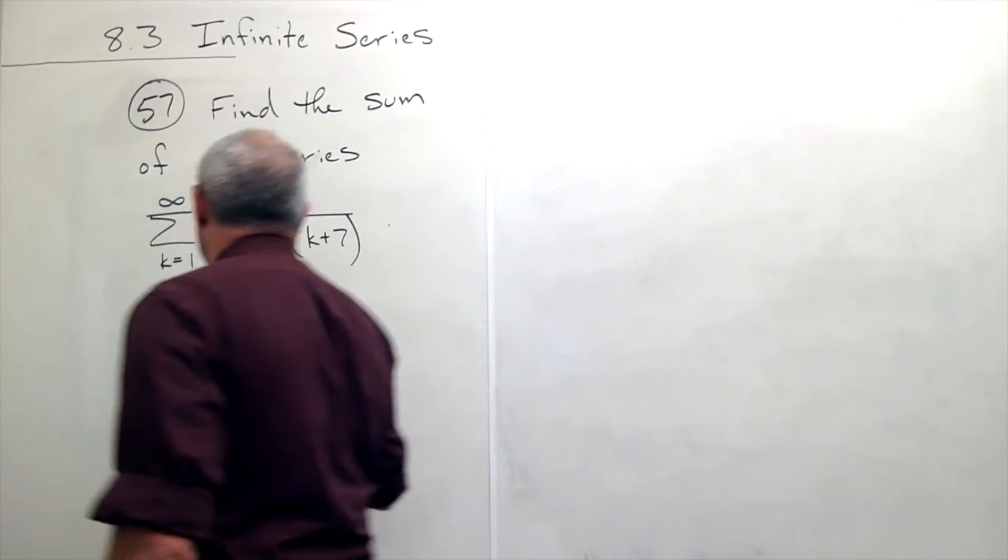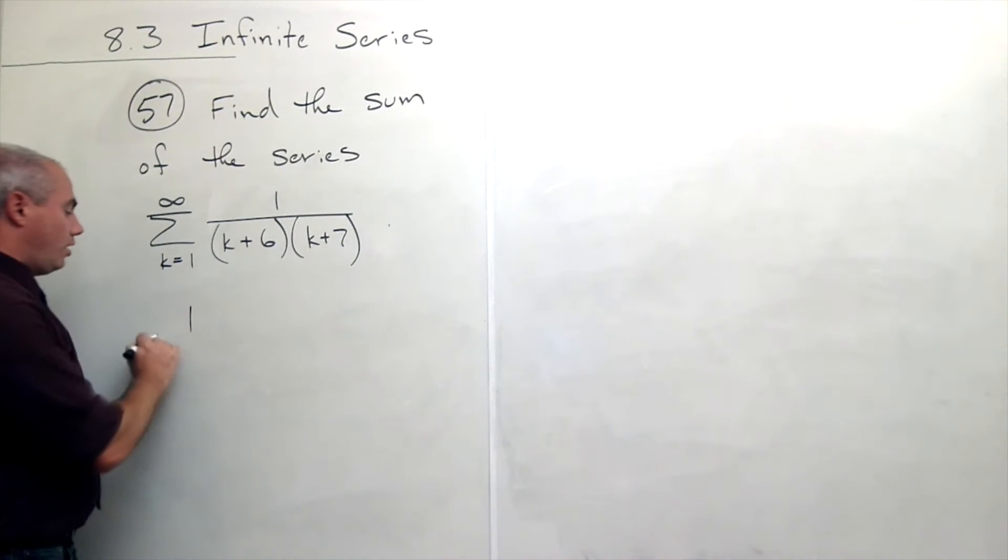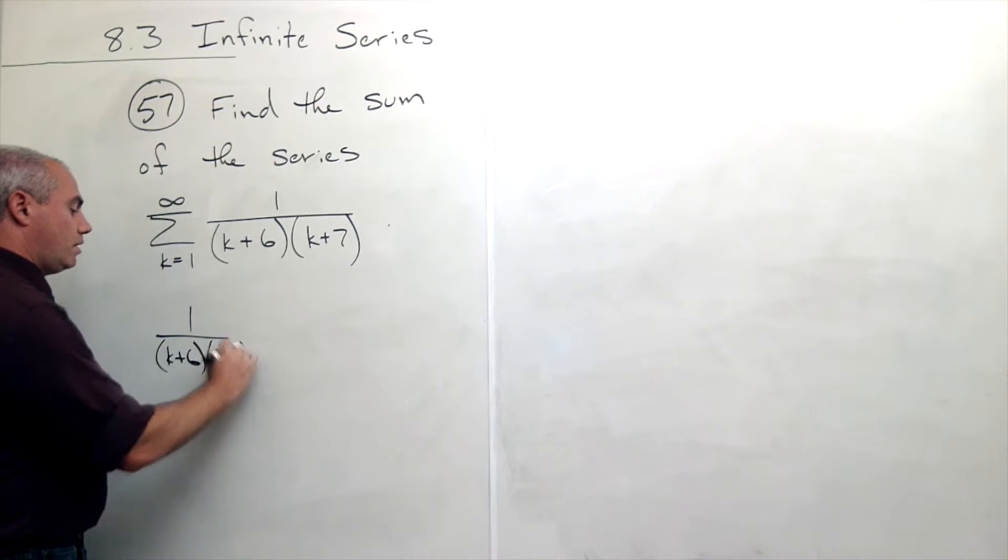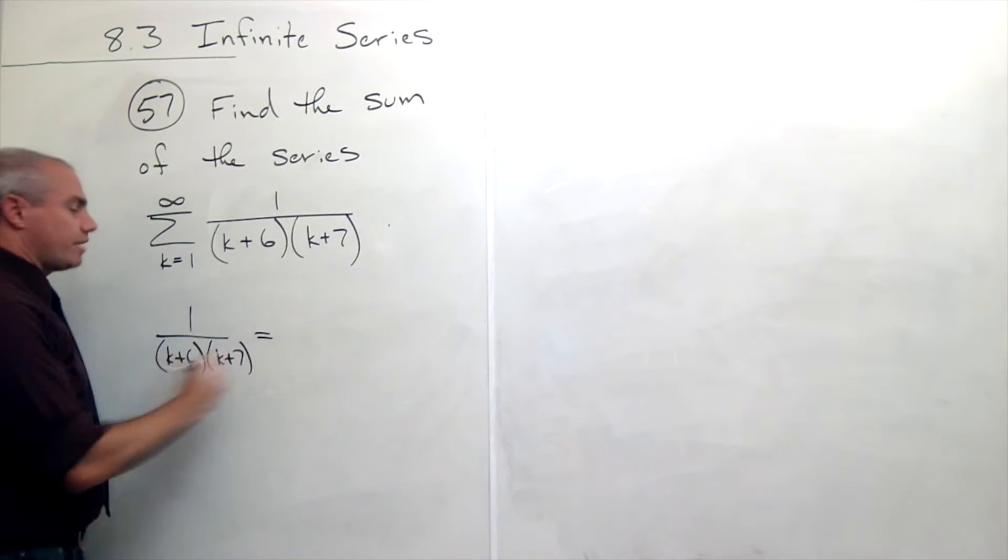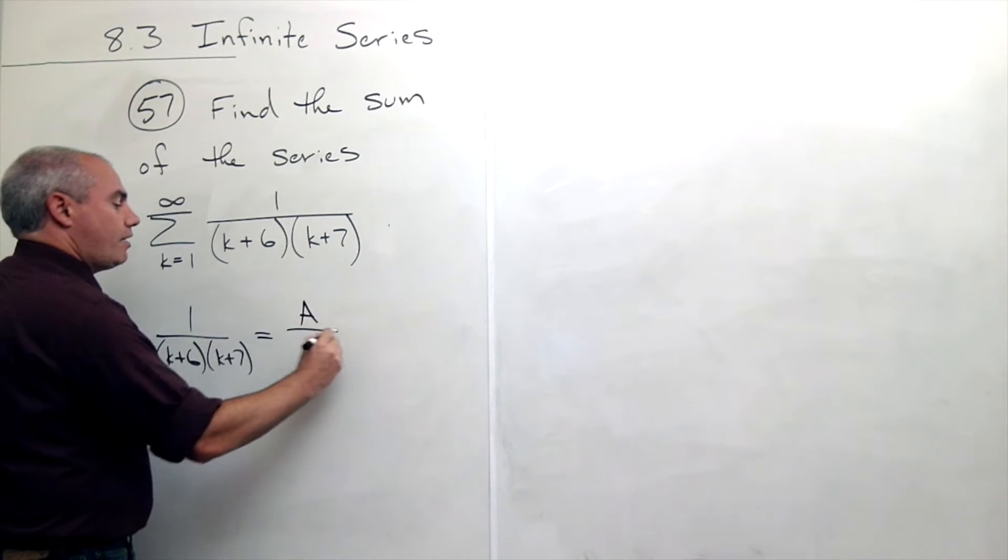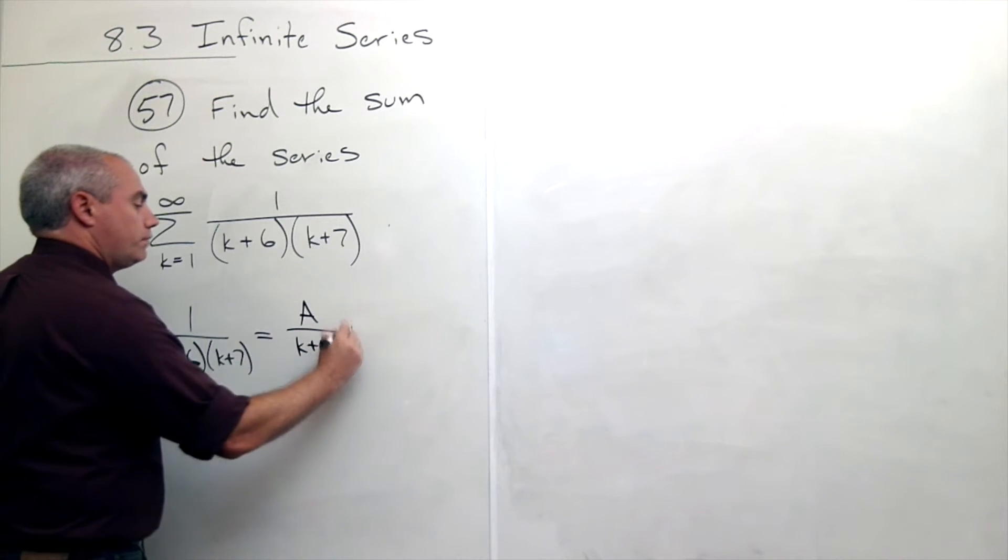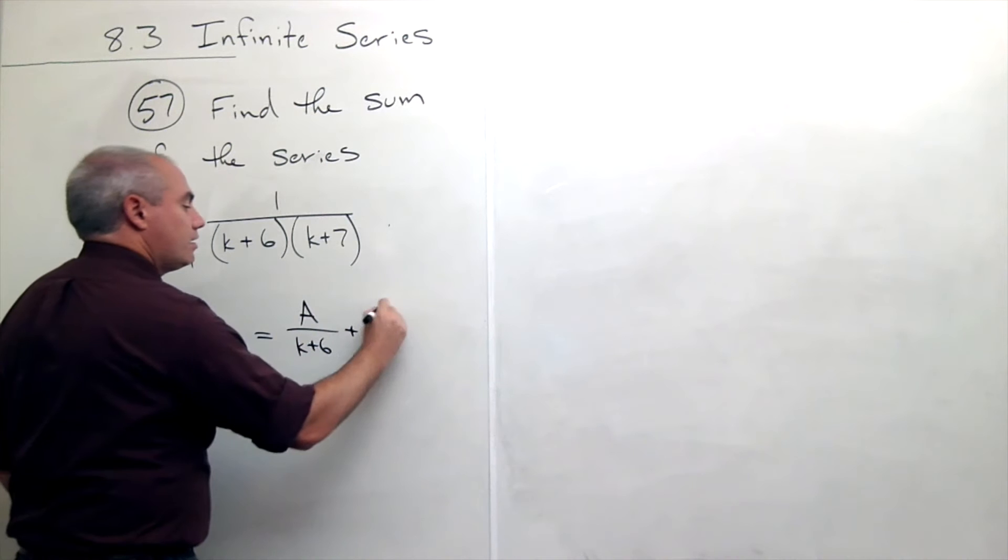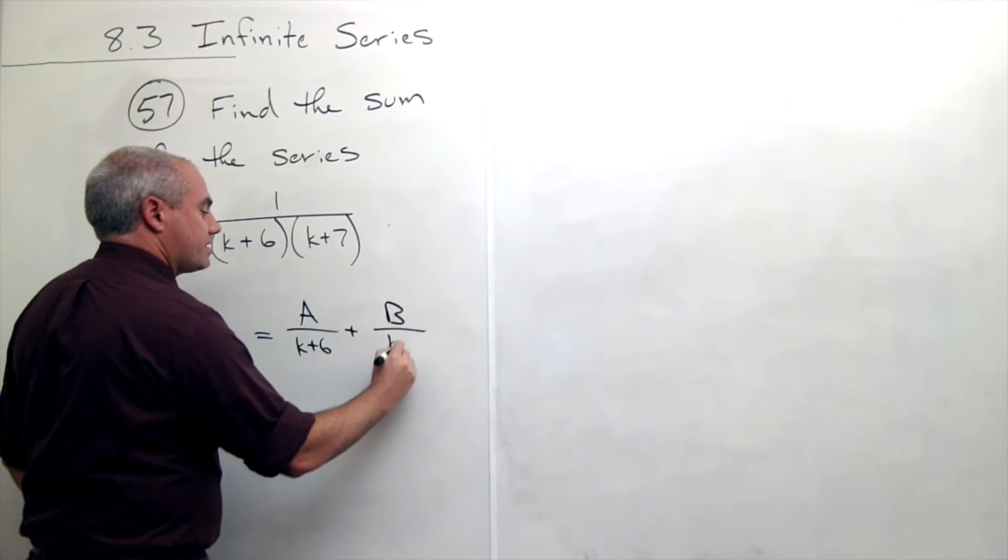Okay, so what I want to do is I want to look at 1 over (k plus 6) times (k plus 7) and using partial fractions I know that should have the form A over (k plus 6) plus B over (k plus 7).